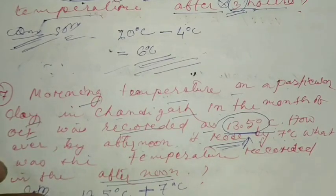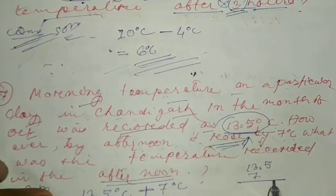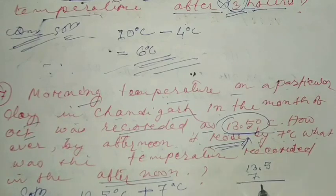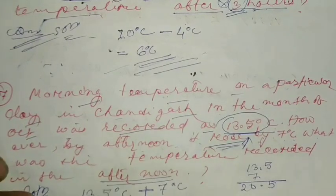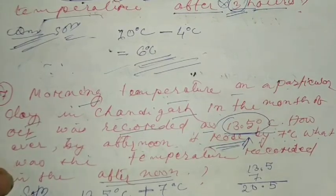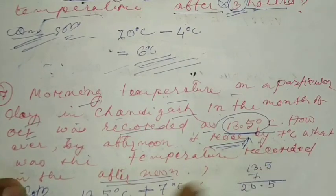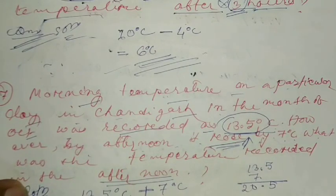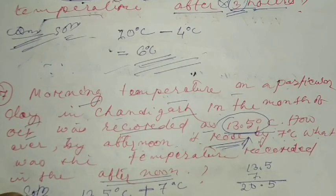13.5 plus 7 equals 20.5 degrees Celsius. The temperature recorded in the afternoon is equal to 20.5 degrees Celsius.